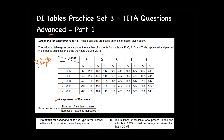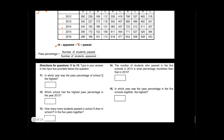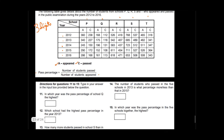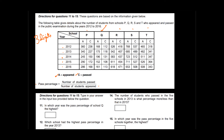This is an advanced set because of extensive calculations. The first question asks: in which year was the passing percentage of school Q the highest? We have to compare school Q's data across all rows — from 2012 up to 2016.